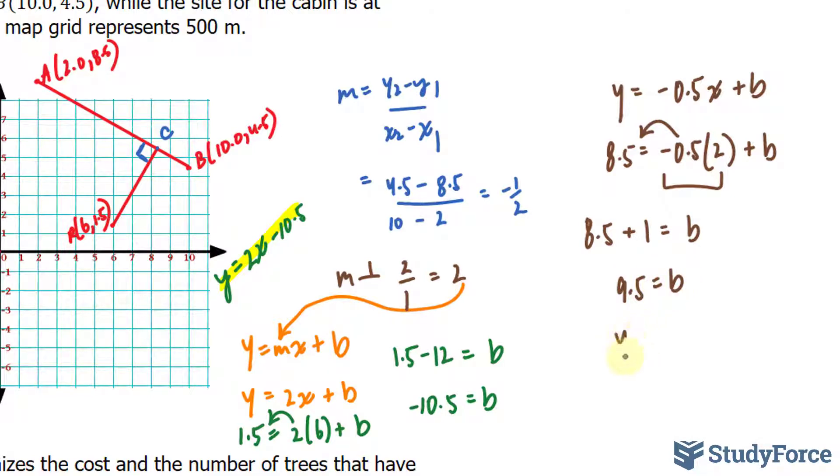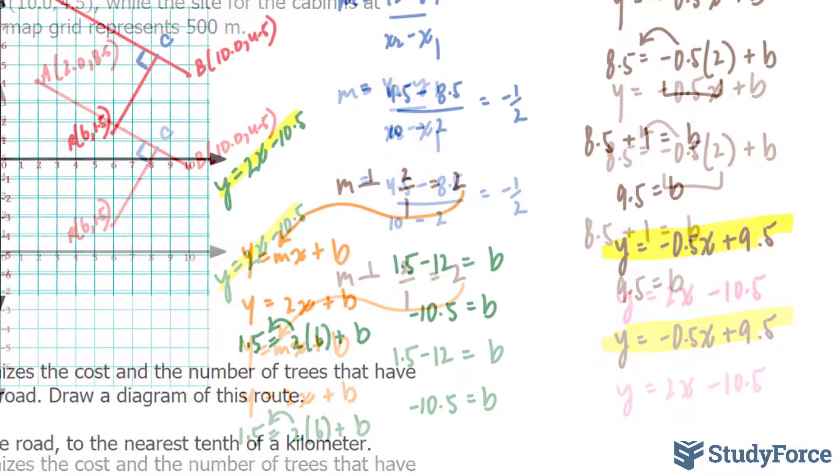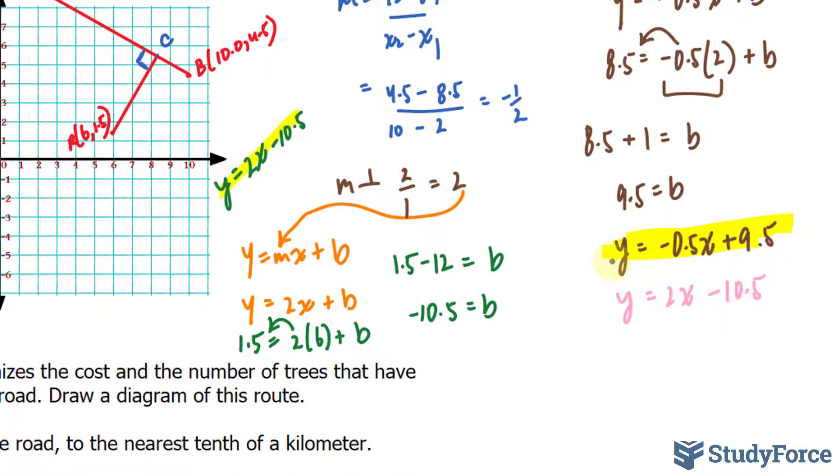Therefore, our equation is negative 0.5x plus 9.5. We have two equations which we can now solve for the point of intersection. Equation 1 and equation 2. I'll write this down underneath here for simplicity's sake. And I'll use the method of substitution to find out what my point of intersection is. So I'll take this and substitute it into here where I have 2x minus 10.5 equals negative 0.5x plus 9.5.